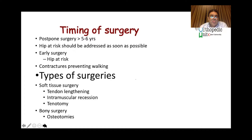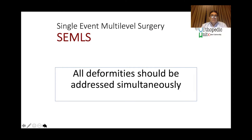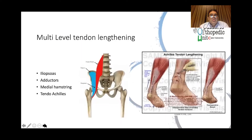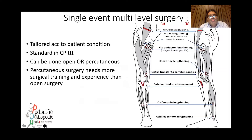Types of surgery include soft tissue surgery such as tendon lengthening, intramuscular recession, or tenotomies, and bony surgery such as osteotomy at the hip or knee. The most common operation used in CP is single-event multilevel surgery (SEMLS), where all deformities are addressed simultaneously. Most commonly we perform iliopsoas tendon lengthening, adductor lengthening, medial hamstring lengthening, and tendo-Achilles lengthening. There is no one standard operation for all CP children; every patient needs an operation tailored to their needs. Surgery can be performed via open or percutaneous technique, though the percutaneous technique requires a very well-trained surgeon with long-lasting experience.